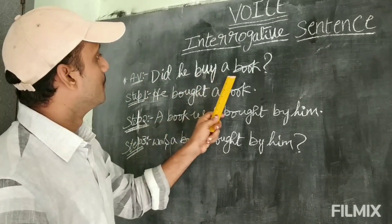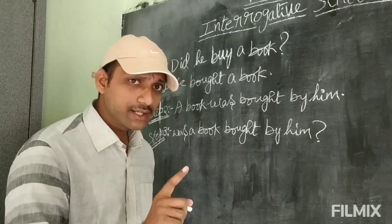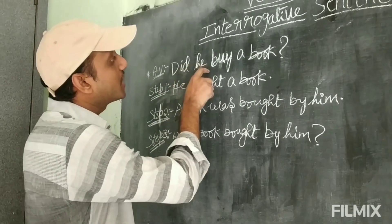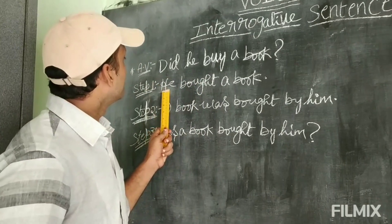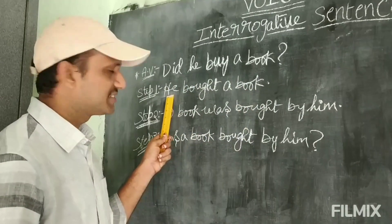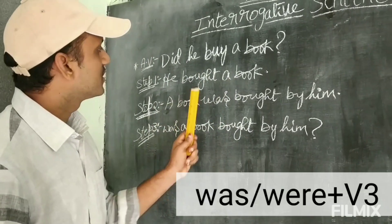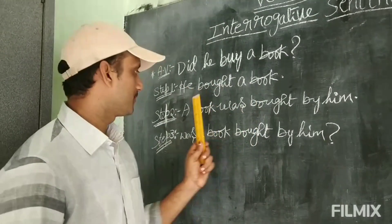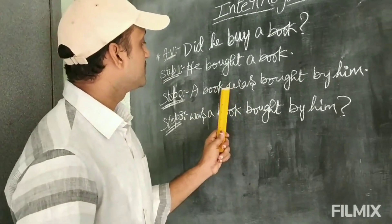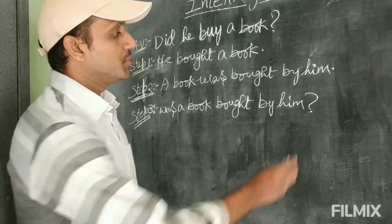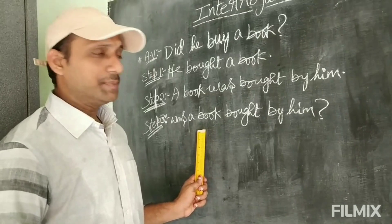Let us see another example: 'Did he buy a book?' By seeing 'did,' we know it is simple past. We answer the question as: 'He bought a book.' 'A book' is the sufferer; 'he' is the doer. For simple past in passive voice, the rule is: was/were plus V3. So 'a book was bought by him.' To form the question: 'Was a book bought by him?' — ending with a question mark.